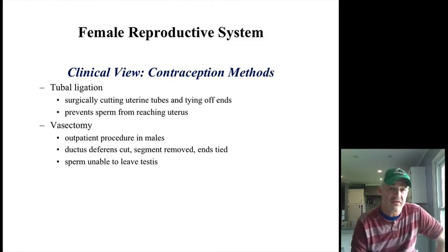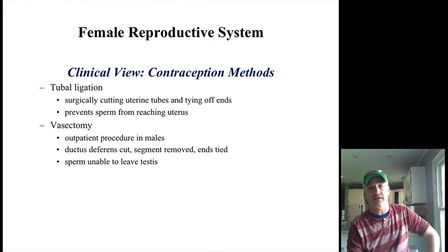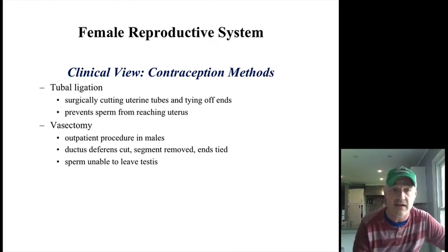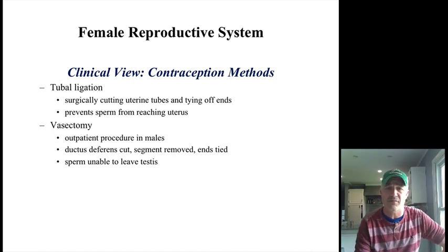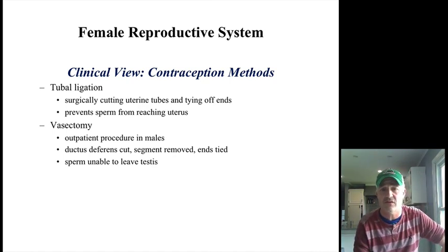Much like a vasectomy in the male, you can also cut the tubes in the female. Tubal ligation actually prevents the egg cells from getting down and making their way to the uterus — it is not preventing sperm from reaching the uterus, as is sometimes incorrectly stated. The last thing we're going to talk about is the uterine cycle and what takes place during that, and then we will be done with all of our material.